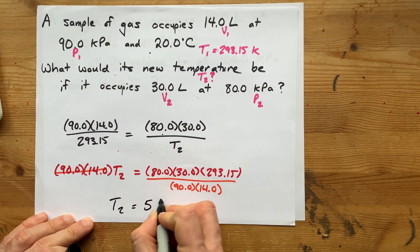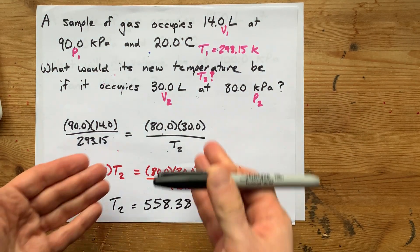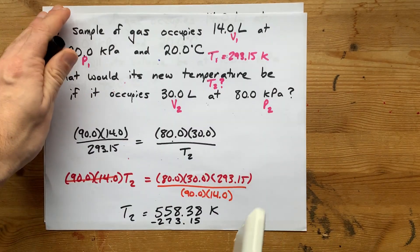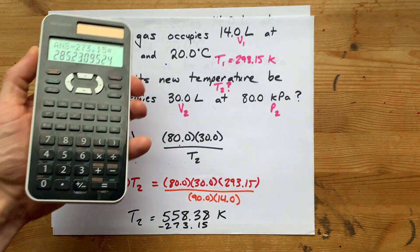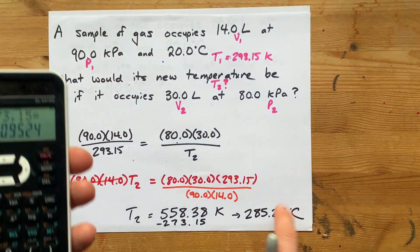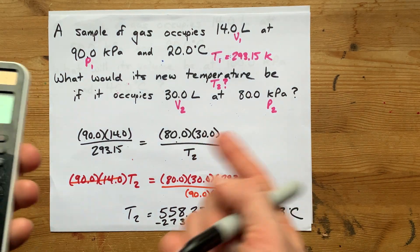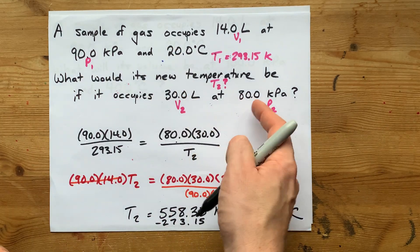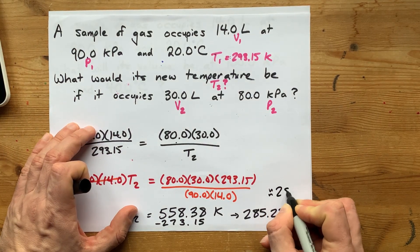T2 is 558.38 Kelvin. If I want to convert that to Celsius, I subtract 273.15, which gives 285.23 degrees Celsius. That is hot — but the volume did double and the pressure barely changed, so I was expecting the absolute temperature to nearly double as well. Rounding to three significant figures, my answer is 285 degrees Celsius.